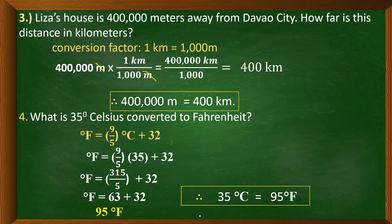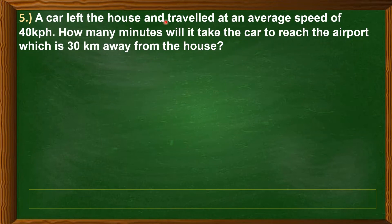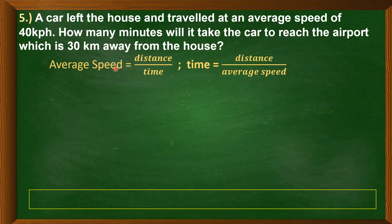Fifth problem: A car left the house and traveled at an average speed of 40 kilometers per hour. How many minutes will it take to reach the airport, which is 30 kilometers away? This problem involves average speed and distance. By formula, average speed equals distance over time. Since we need time, we derive: time equals distance over average speed.